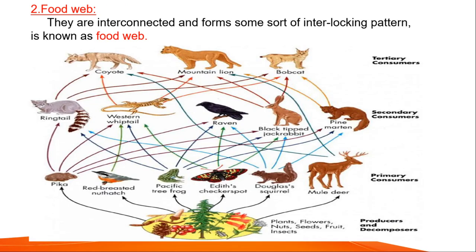Next, coming to food web. Interconnected food chains form some sort of interlocking pattern — this is known as a food web. While a food chain is a clear linear chain form, a food web is interconnected with a complex interlocking pattern.